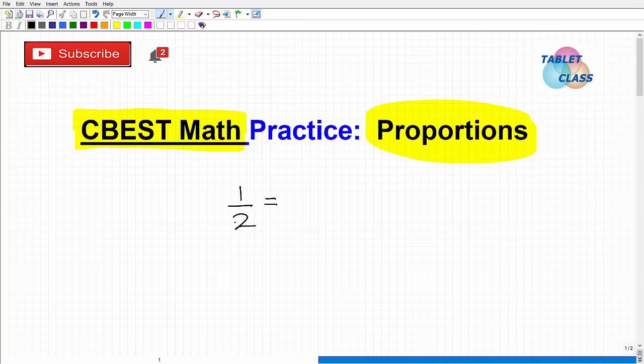Some other fraction that's equivalent to 1 over 2, or 50 percent. Let's use a fraction, let's say 5 over 10. This fraction, if I reduce it, is the same thing as one-half. So what we are looking at here is a proportion. A proportion is two equal fractions by definition.